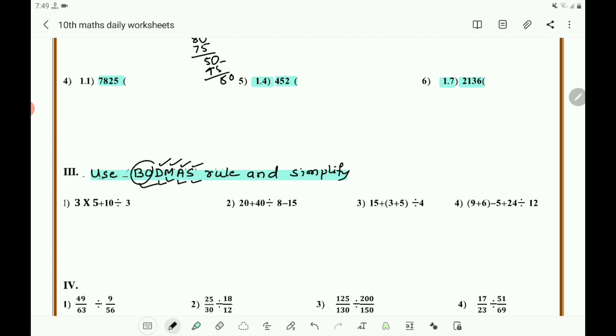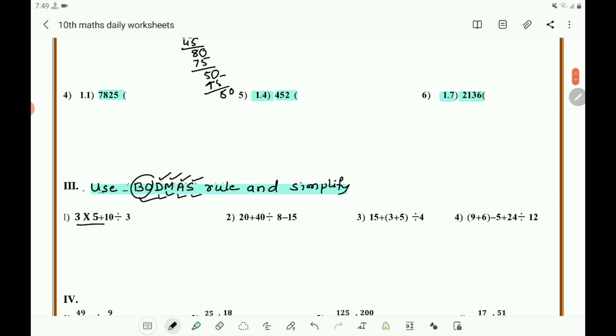Let me take one example here. Bracket is not there, so what is there? Division is there. You divide that. Write it as 3 × 5 + 10 ÷ 3. You can't divide it evenly, so if 10 is divided by 3, write it as 10/3. Then it becomes 15 + 10/3. Now you add.